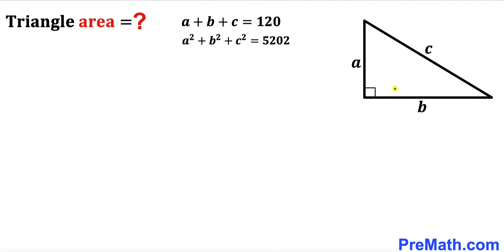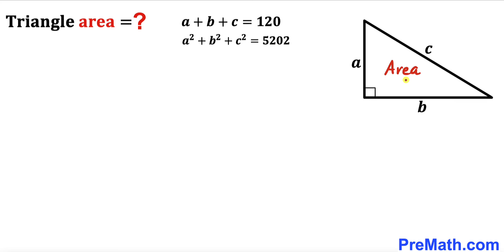Welcome to pre-math. In this video we have a right triangle with side lengths A, B, and hypotenuse C, as shown in the diagram, such that the sum of their side lengths A plus B plus C equals 120 units — the perimeter of this triangle — and the sum of the squares of their sides A² plus B² plus C² equals 5202 square units. Our task is to calculate the area of this given right triangle.